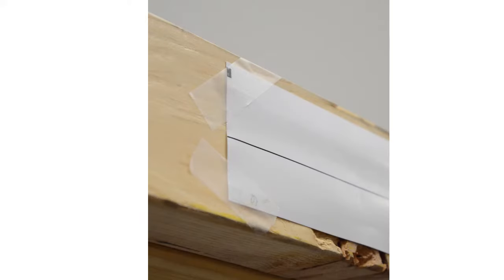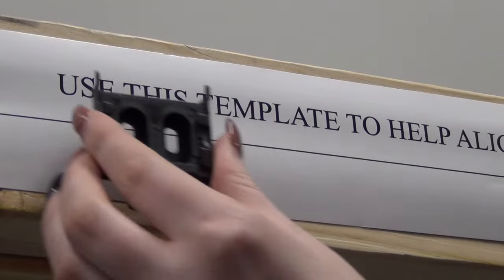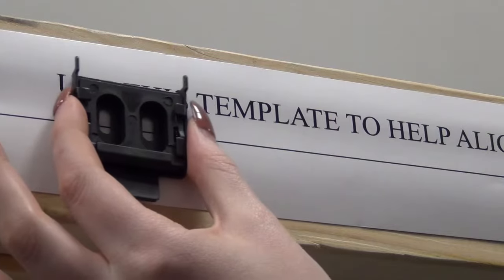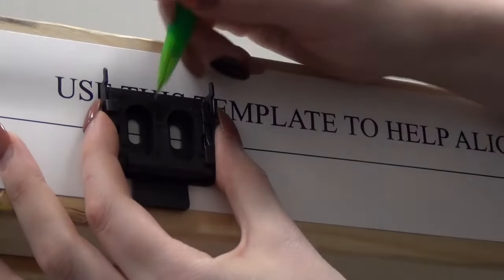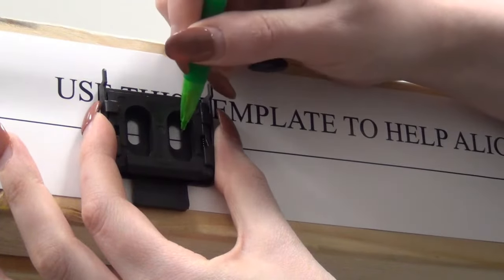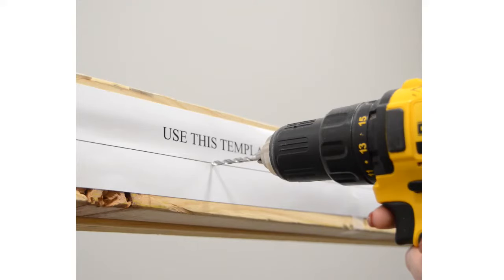Your shade comes with an installation template to align your pilot holes. Follow these steps to use it. Start by temporarily attaching the template to the mounting surface. Make sure it is level and flat. Mark and drill your pilot holes. Remove the template before installing your valence brackets.